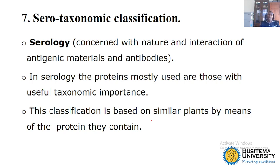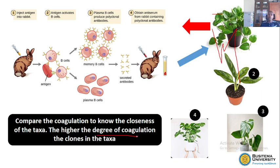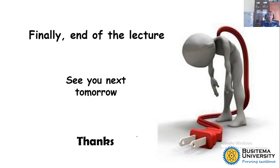The last classification is the serotaxonomic classification. Here we depend on serology, which mainly deals with the blood — specifically the antibodies and how they react. In this case we could use an animal model: we pick plants of the same family, inject the extract into an animal, then test to see how the antibodies are produced and whether they cross-react from both plant 1 and plant 2. If they cross-react, it means the plants are performing a similar function and we put them in a similar group. So we depend on the degree of cross-reaction of the antibodies.